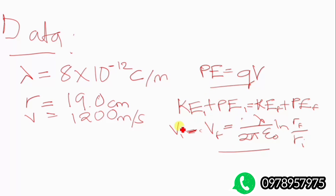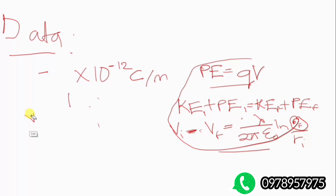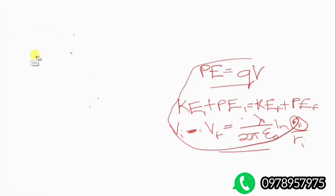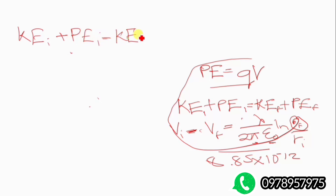We can dive right into the equations. What we want is the final r. We're going to exhaust all these equations to find it. Note that pi is a constant and epsilon is also a constant equal to 8.85 times 10 to the power negative 12. We start with the conservation of energy equation: KE initial plus PE initial equals KE final plus PE final.